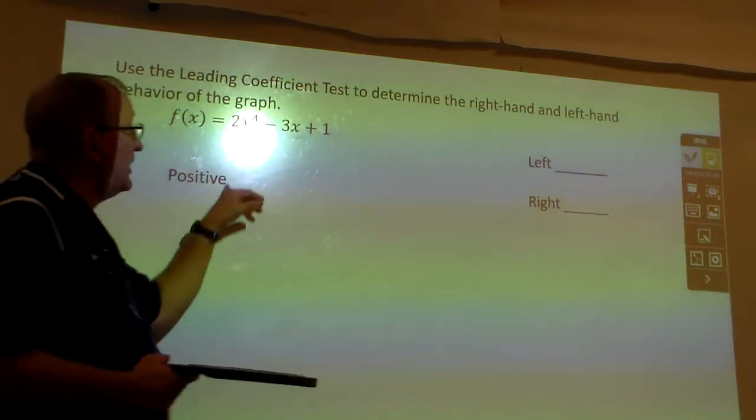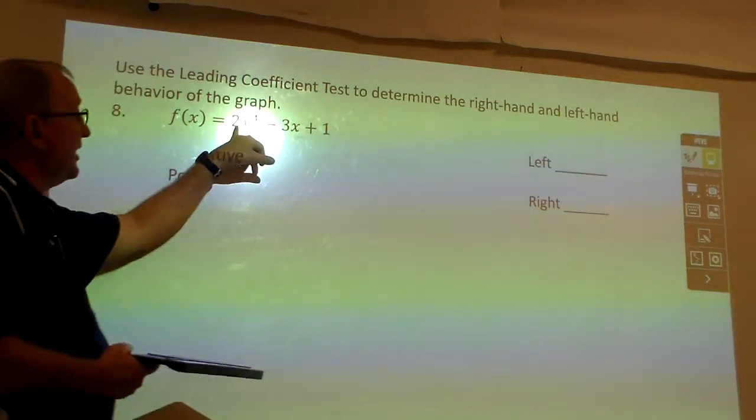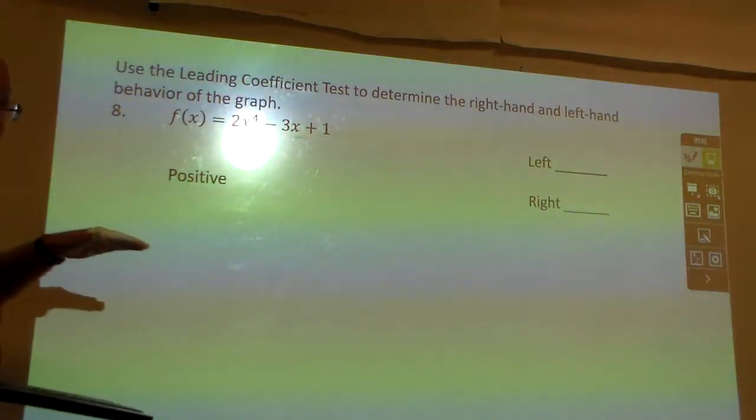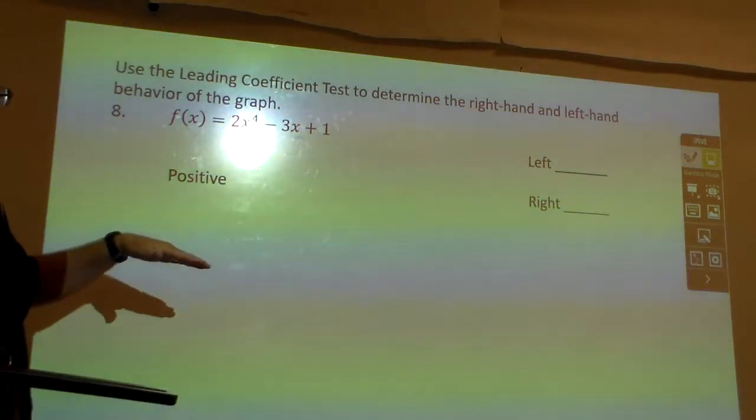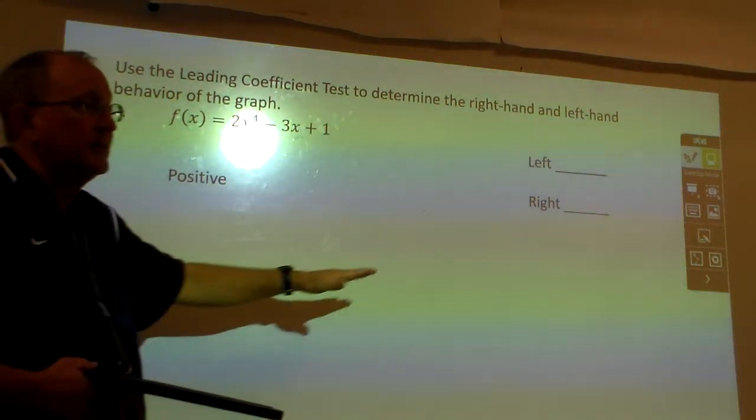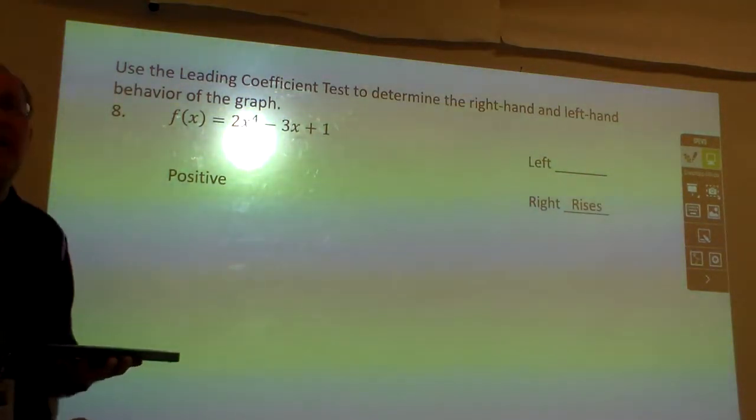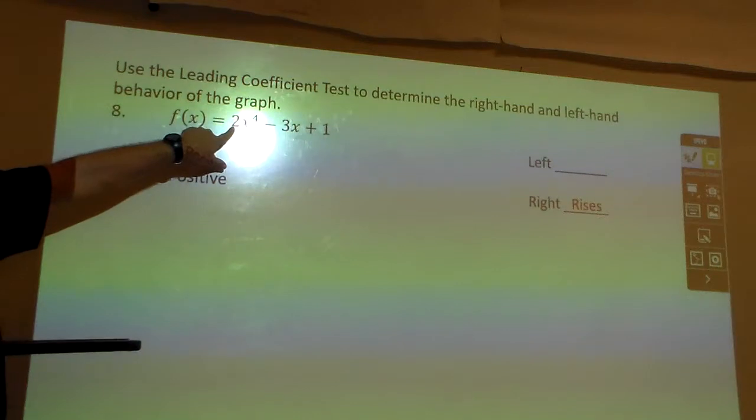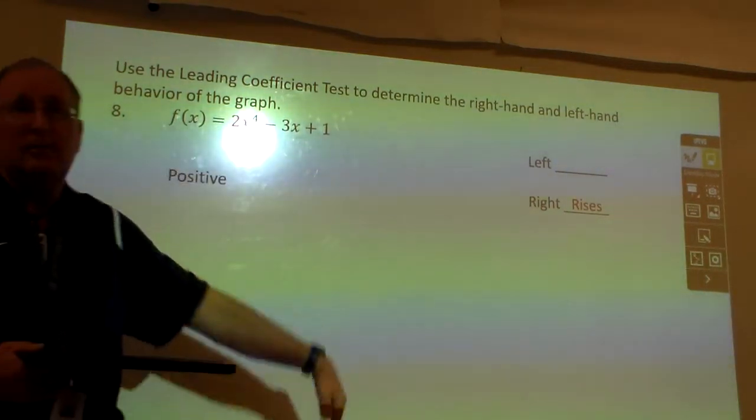So think about it. On the right side of your graph, all the x's are positive, and so if that number's a positive, then that means everything's positive. And so if all the numbers are positive, on the right side, your graph's going to rise. So always do the right side first, because the right side will always do whatever that is. If it's positive, it's going to rise, and if it's negative, it's going to fall.